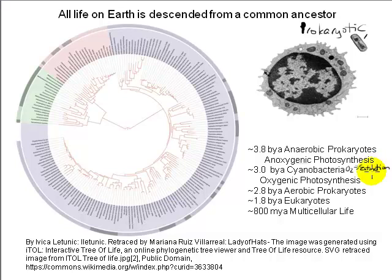First, oxygen was toxic to the vast majority of anaerobic life that existed at that time, and so it led to a global mass extinction event, as well as the selection of new aerobic species capable of surviving those conditions. It also led to the presence of ozone in the atmosphere, which blocks ultraviolet radiation and reduced UV levels at the surface, eventually allowing organisms to emerge from the oceans and leading to the evolution of land plants and animals.